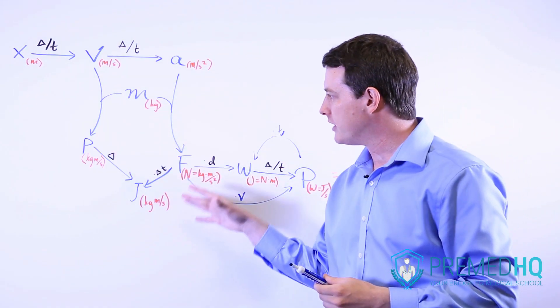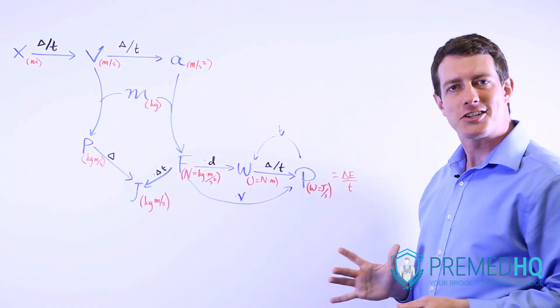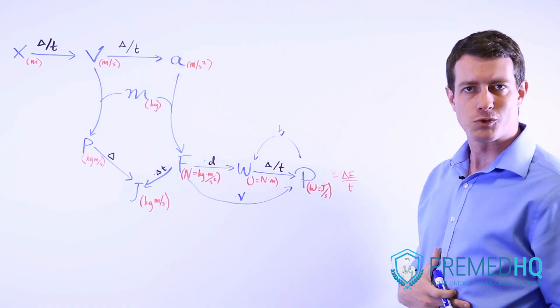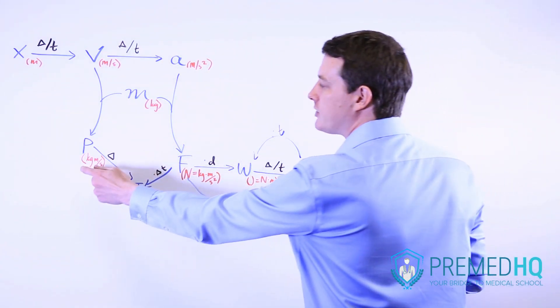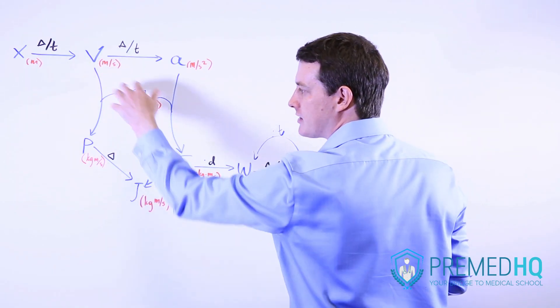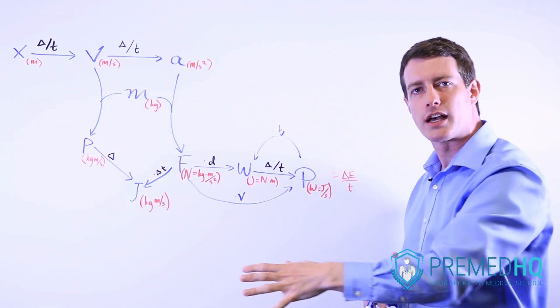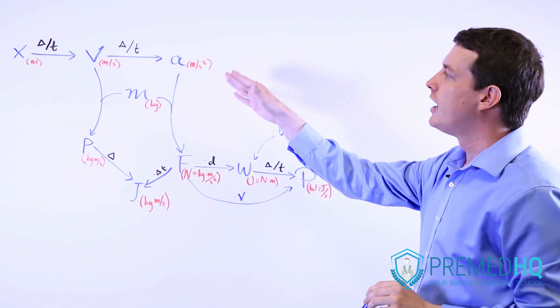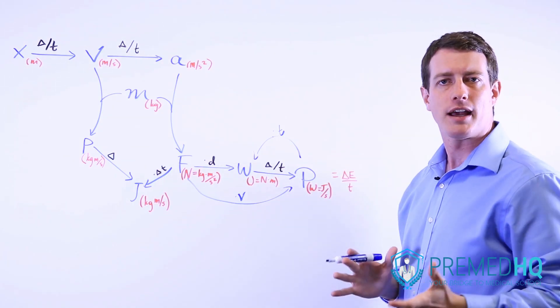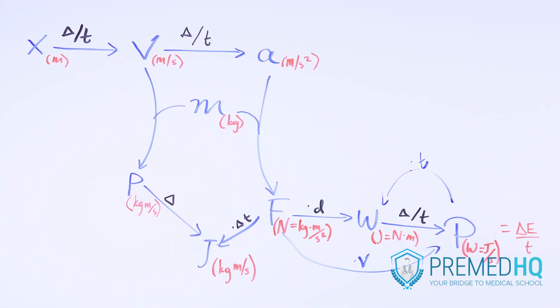These other units don't have SI units attached to them, but they are easy to derive just by looking at the modifications we're making. Here, to get to momentum, we're just multiplying kilograms by meters per second. And so the unit of momentum is simply the kilogram meter per second. And so this chart helps you easily derive all of the major units that you'll be using for mechanics problems.